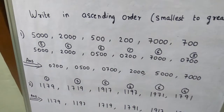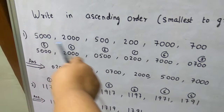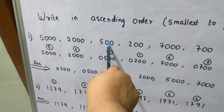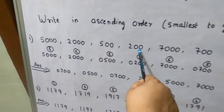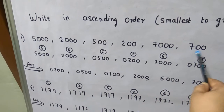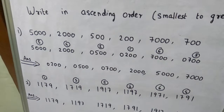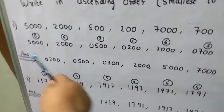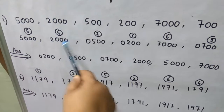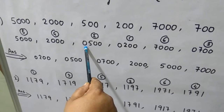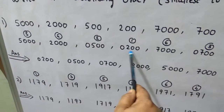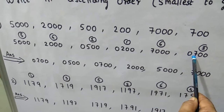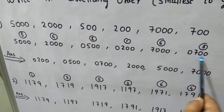See — 5000 is a 4-digit number, 2000 is a 4-digit number, but 500 is a 3-digit number, 200 is a 3-digit number, 7000 is a 4-digit number, and 700 is a 3-digit number. For 3-digit numbers, you have to put 0 in the 1000s place. So 500 becomes 0500, 200 becomes 0200, and 700 becomes 0700.